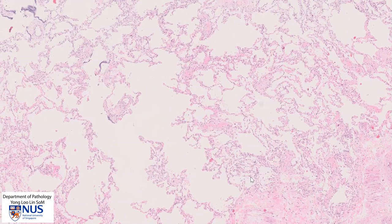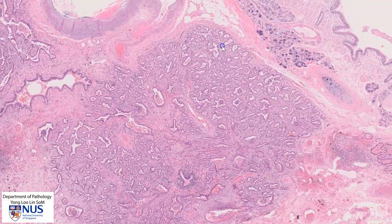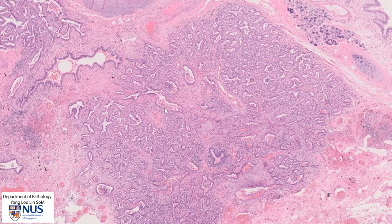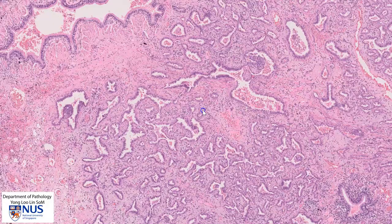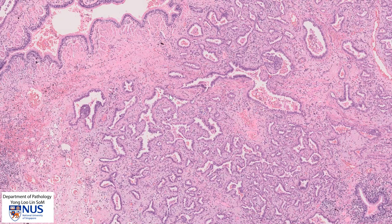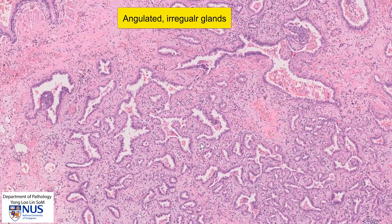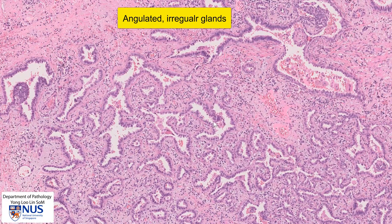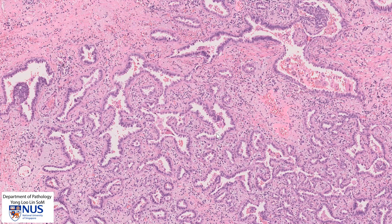Now let's move on to the tumor. At this magnification we can see a lot of irregular, very angulated glandular spaces. Zooming in, you can see how angulated — almost triangular — these irregular glandular spaces are. We can still appreciate that they are forming glands; however, these glands are extremely irregular, which is a very atypical architectural feature. There is also a lot of broad stroma in between these glands, unlike the alveolar septa which have hardly any stroma at all.